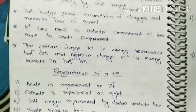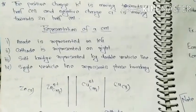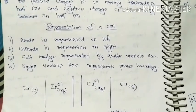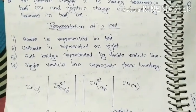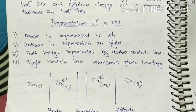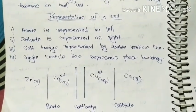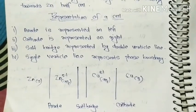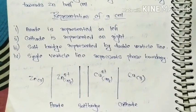Now let's see representation of a cell. Anode is represented on left. Cathode is represented on right. Salt bridge represented by double vertical line. Single vertical line represents phase boundary. I hope you will understand this.